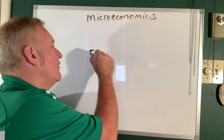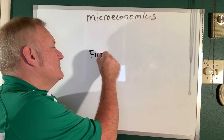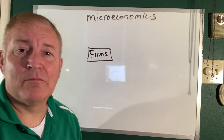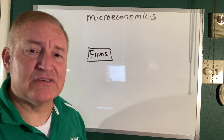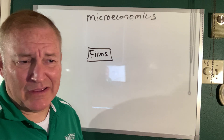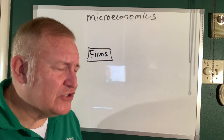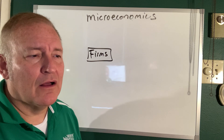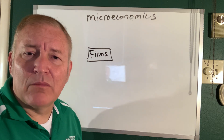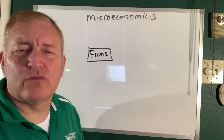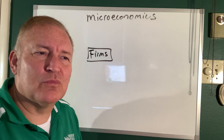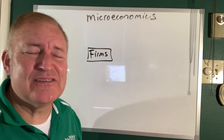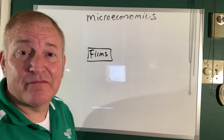The first are firms. Now what's a firm? A firm is just a business. The structure doesn't matter — it could be a corporation, it could be a partnership, it could be a sole proprietorship. Any kind of business structure or business entity is a firm.